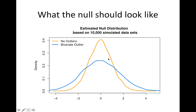So the question is: when we permute our data in the non-parametric permutation test, is that weirdness — the bivariate outlier — being preserved in order to ensure that our null distribution is fattened up like this?